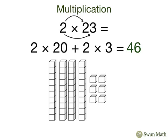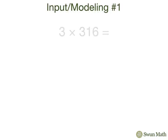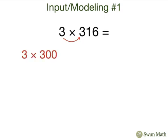We'll use the distributive property to find the product of 3 times 316. First, we'll multiply 3 times 300, then we'll add that to 3 times 10, and finally we'll add that to 3 times 6.